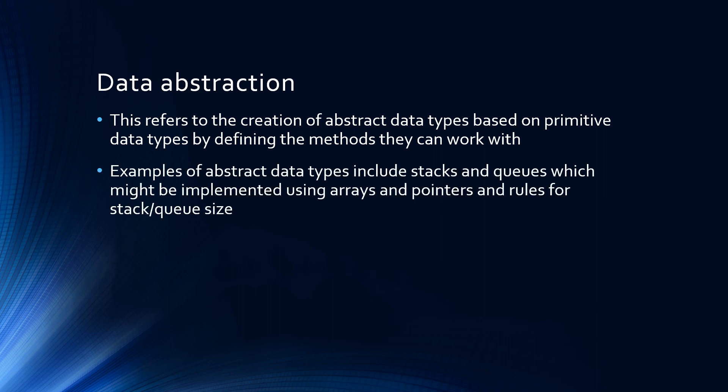Examples of abstract data types include stacks and queues, which might be implemented using arrays and pointers and rules for the stack or queue size.